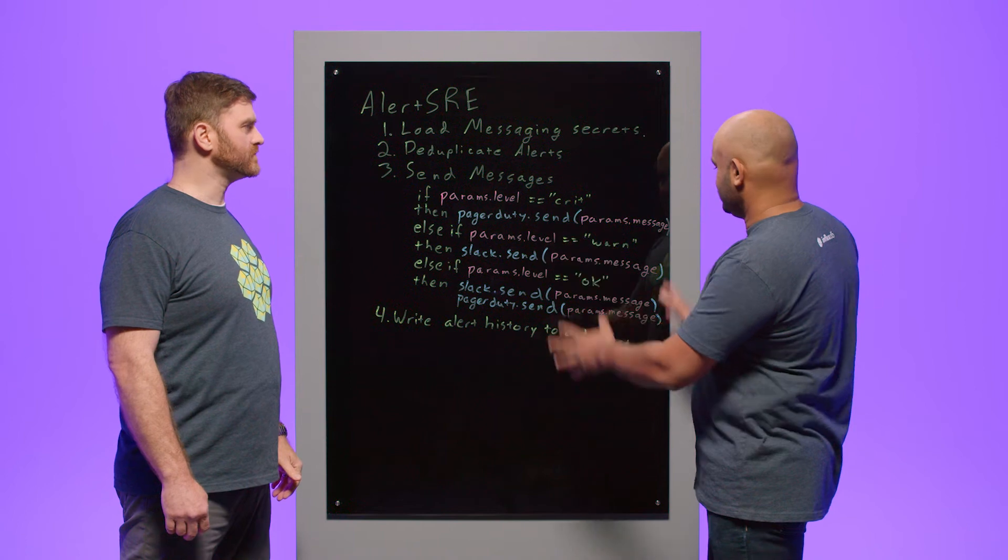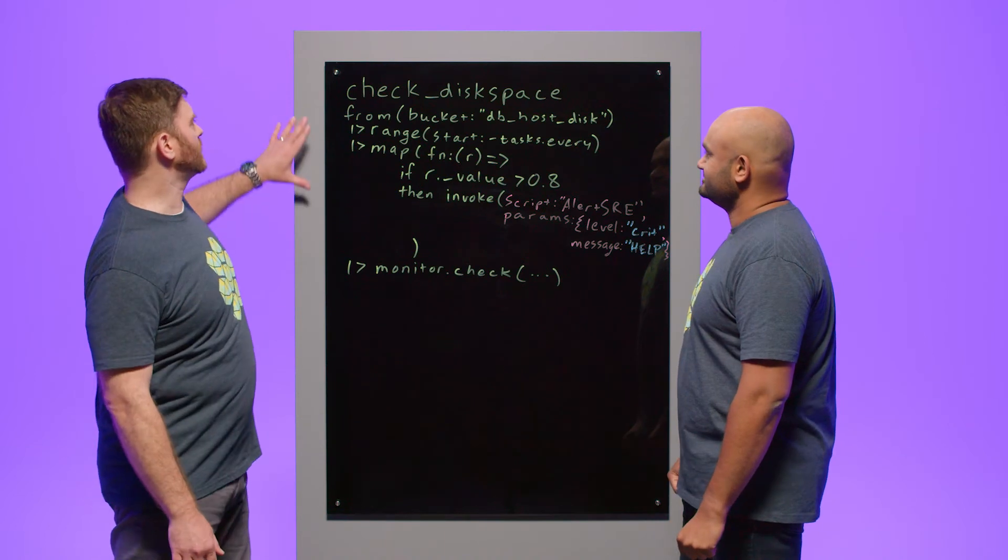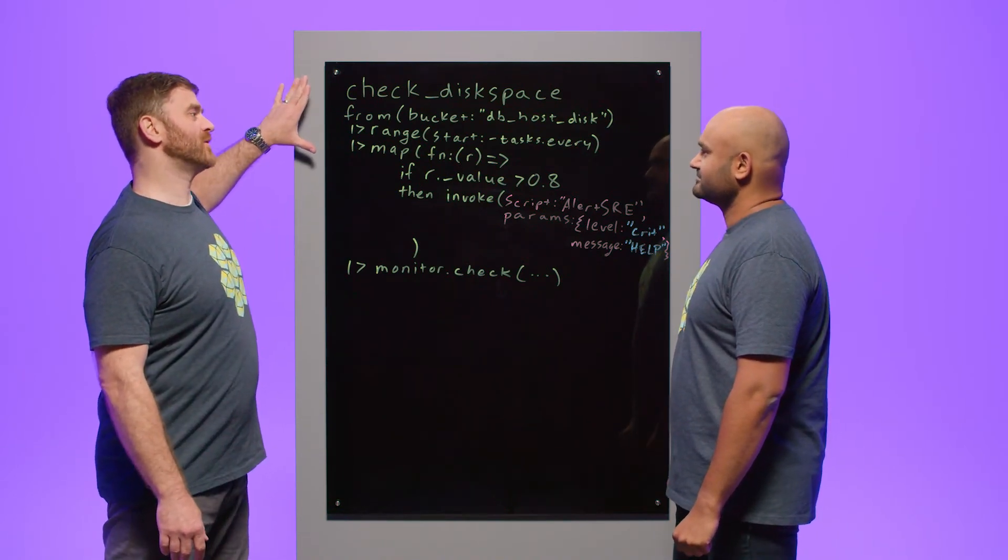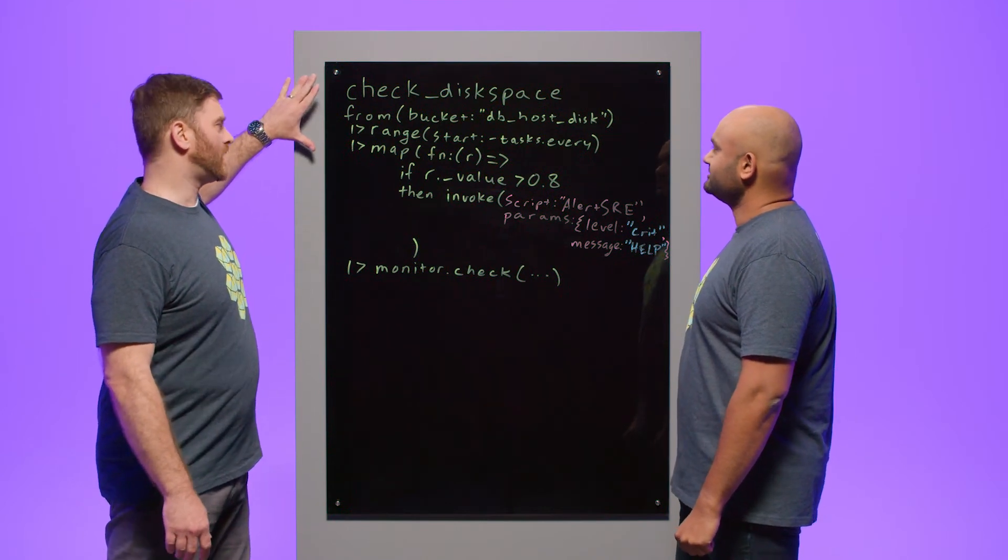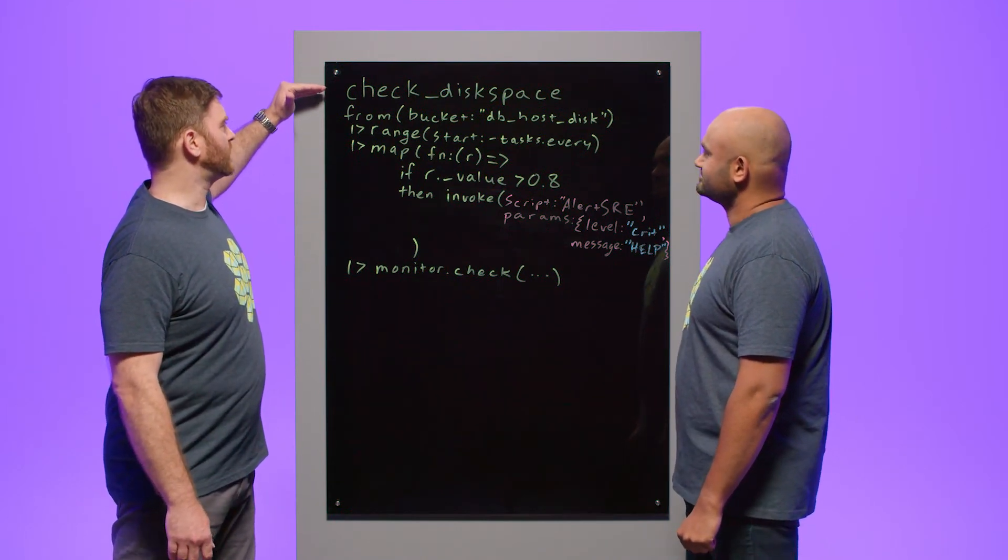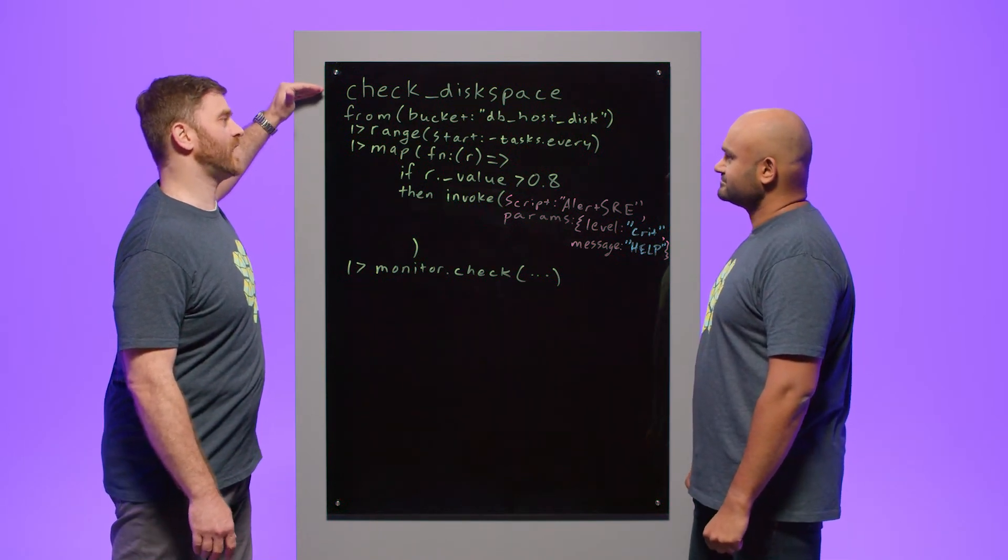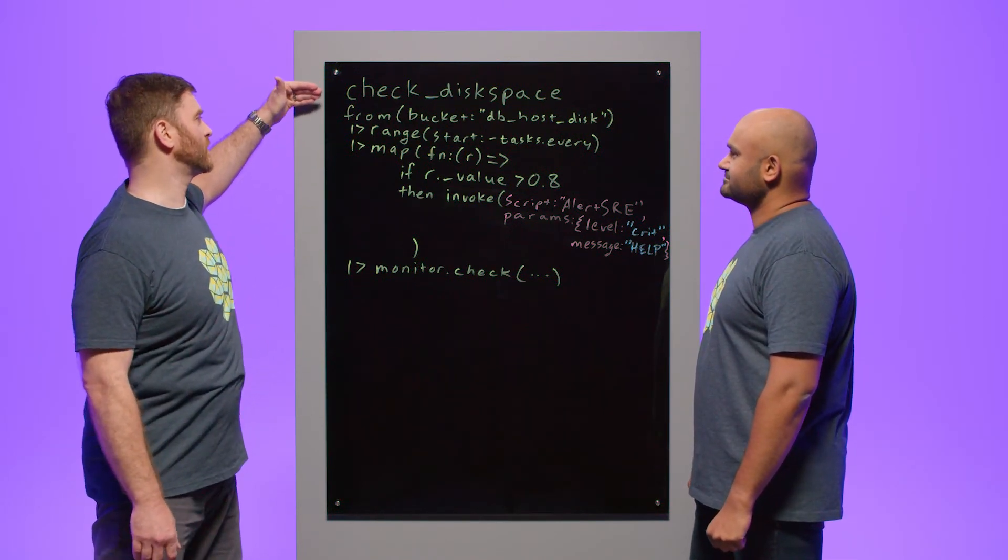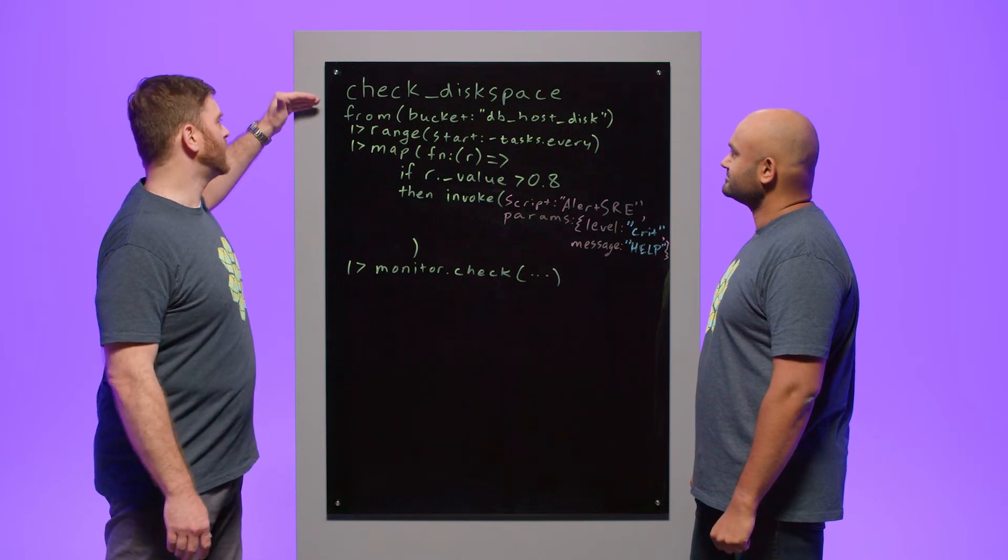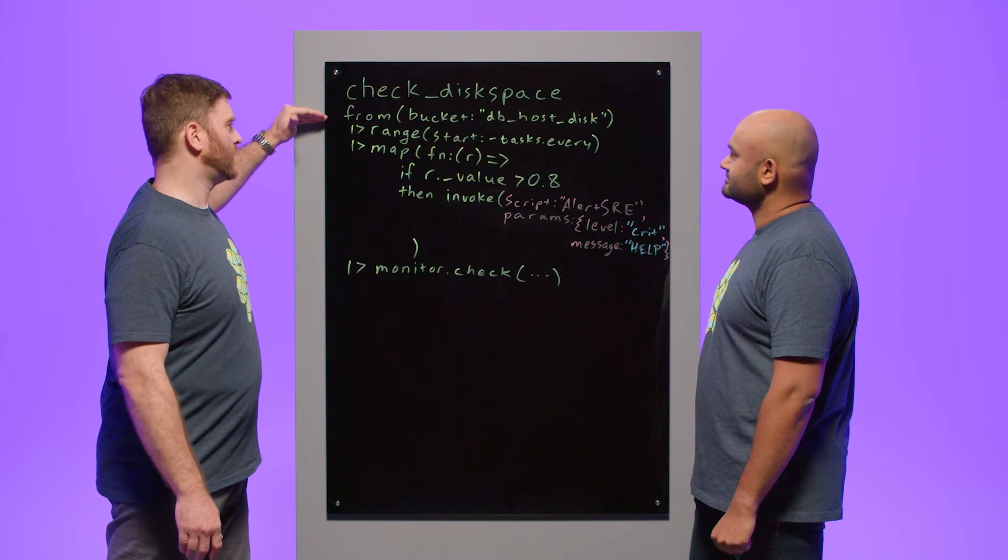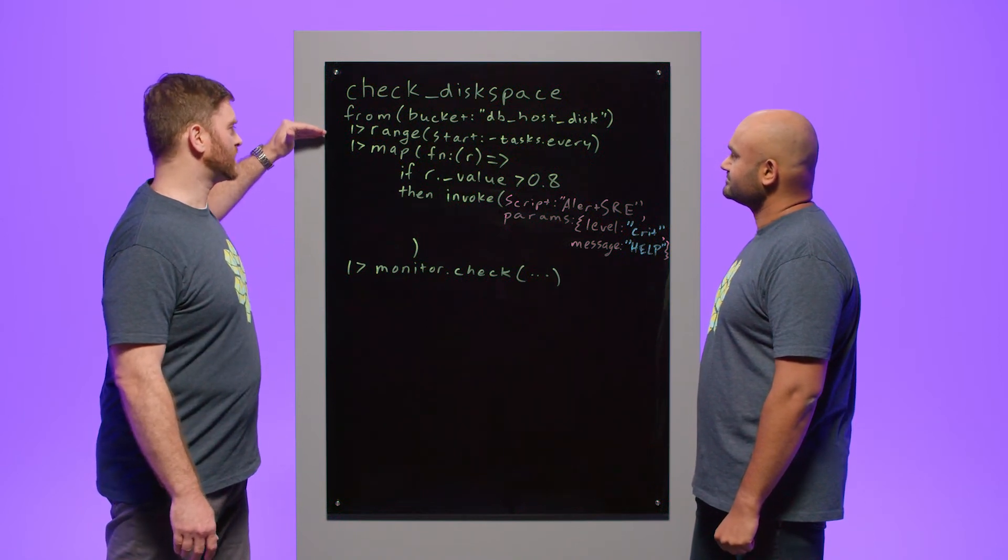So this is our alert policy and it's enshrined in this script. So Adam, how can we trigger the alert policy that we set up? Yeah, great question, Vinay. So we can actually use the existing checks system that we've had from the beginning within Flux Cloud. So here we have a check that very simply checks disk space. It's a very simple metric, but it is something that SRE admins are generally very focused on monitoring. And so here we're checking the disk space from the host disk bucket.